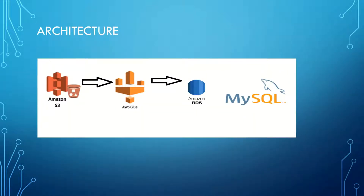This is the architecture we are going to implement in this video. First, we are going to load the data into Amazon S3. Then we will use the AWS Glue Crawler service to create the data source. Then we will use an AWS Glue job to load the data from Amazon S3 to Amazon RDS MySQL database engine.